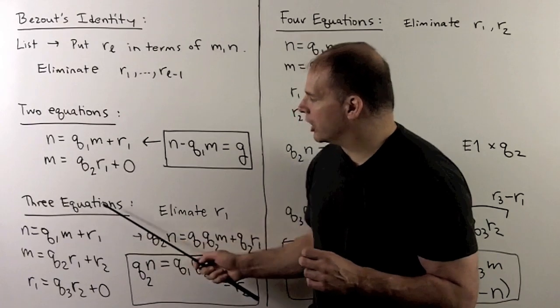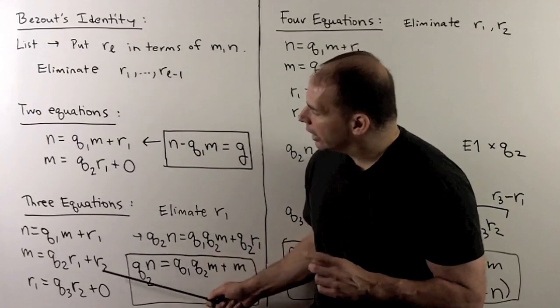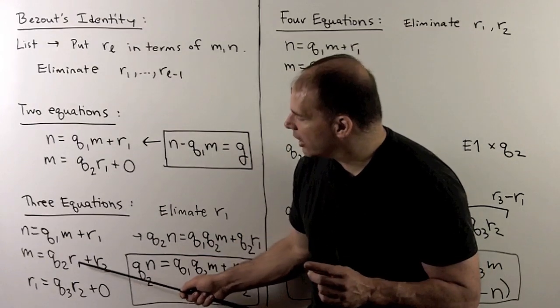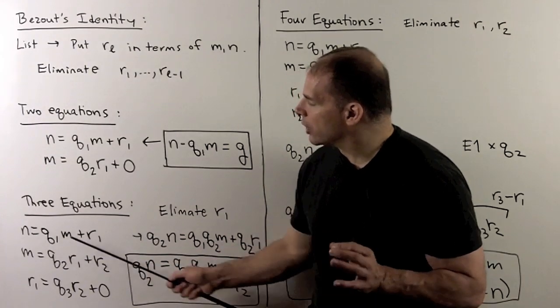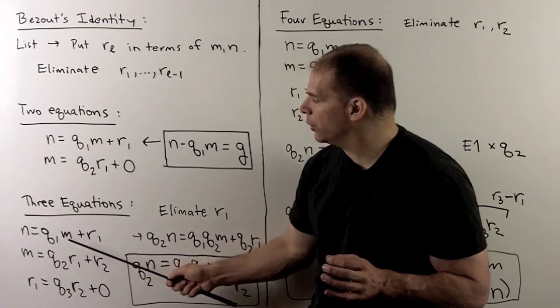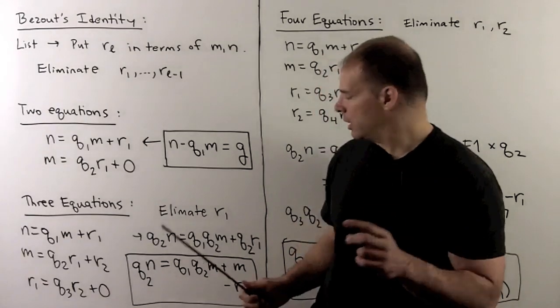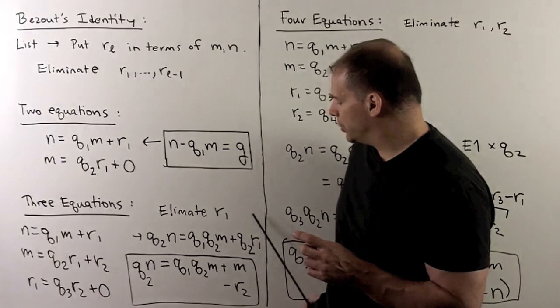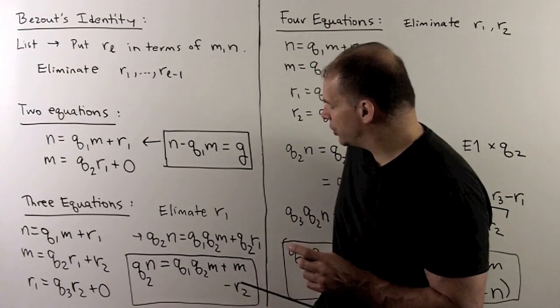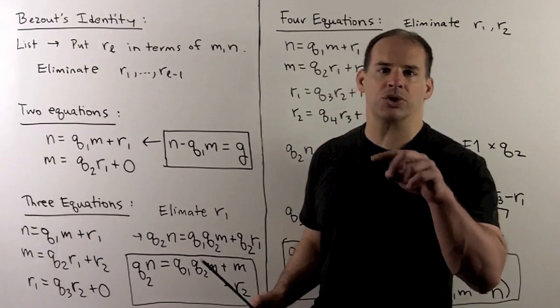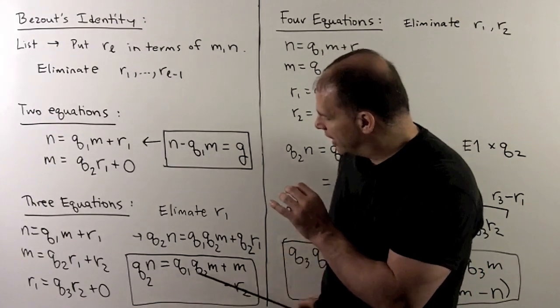When I have three equations, what we'll do, note, we want to eliminate r1. If I take a look at the second equation, if I get q2r1, then I can substitute that with m minus r2. So, I multiply the first equation by q2, that's going to give me q2n equal to q1q2m plus q2r1, and then we substitute. So, in our final equation, we have everything in terms of r2, m, and n. The q's are just going to be the coefficients. So, Bézout's identity holds in this case.